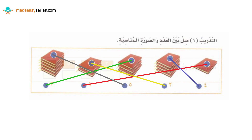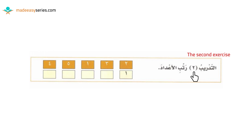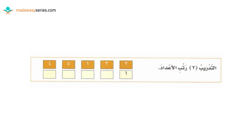Now التدريب الثاني, the second exercise. It says رتّب الأعداد — put the numbers in order, from lowest to highest. The first number is already done for you. The remaining numbers are اثنان، ثلاثة، واحد، خمسة، أربعة — put them in order. Pause the video and complete the exercise. The answers are: واحد, then اثنان which is two, then ثلاثة which is three, then أربعة which is four, then خمسة which is five.